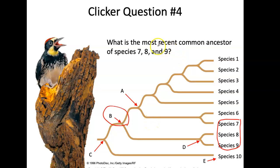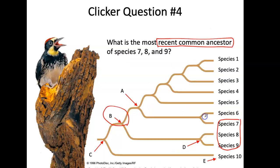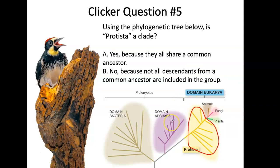We talk a lot about most recent common ancestor in biology. Another clicker — using the phylogenetic tree below, is Protista a clade? The Protista are the yellow ones. The answer is no, because not all descendants from that common ancestor are included — you would have to include all of them for it to be a clade.